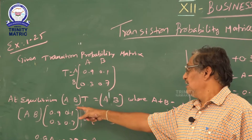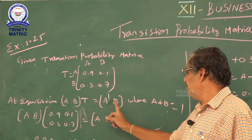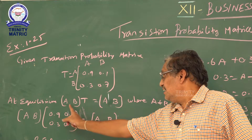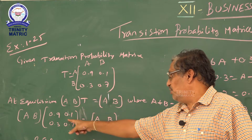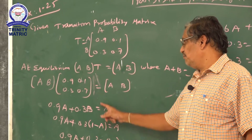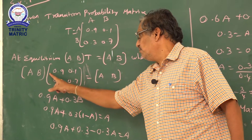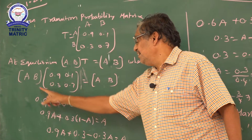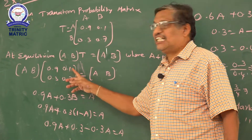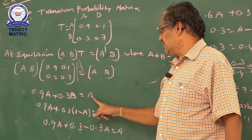Kindly note this point. At equilibrium, [A B] × transition probability matrix = [A B], where A plus B = 1. Now [A B] is given. You know how to multiply — first row, first column. What you get is 0.9A + 0.3B. You only need the first row, first column, and then equate that first element.